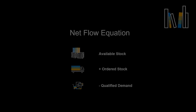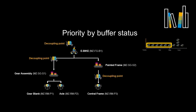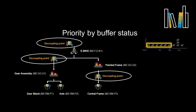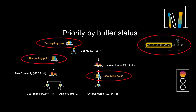DDMRP introduced a net flow concept in order to manage supply orders. The net flow equation uses the following information: available stock, add stock already ordered through supply channels, subtract qualified sales order demand, which equals the net flow position. Each decoupling point is an inventory buffer which only acts on qualified demand. It has three status levels: green, yellow, and red.